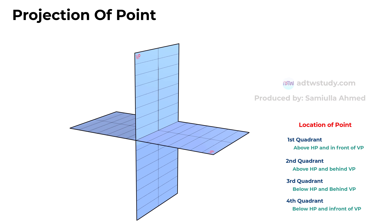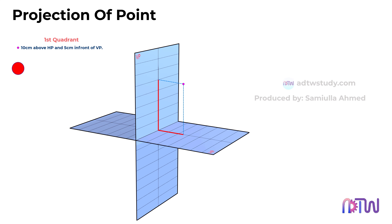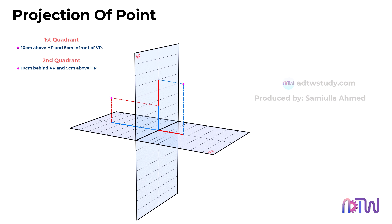It's important to note that questions may not explicitly state the quadrant in which the point lies. Instead, they might specify the point's position as above or below HP and in front of or behind VP. In such cases, you must deduce the quadrant based on these indications. Additionally, questions may provide the distance of the point from the planes. For instance, if a point is 10 cm above HP and 5 cm in front of VP, it is in the first quadrant. If a point is 10 cm behind VP and 5 cm above HP, it resides in the second quadrant.